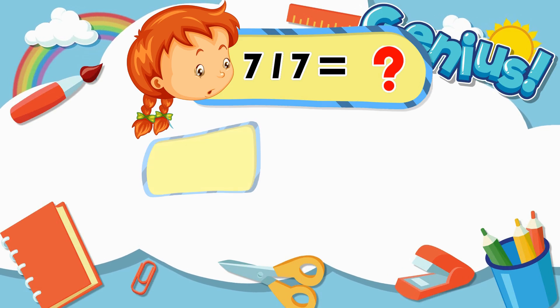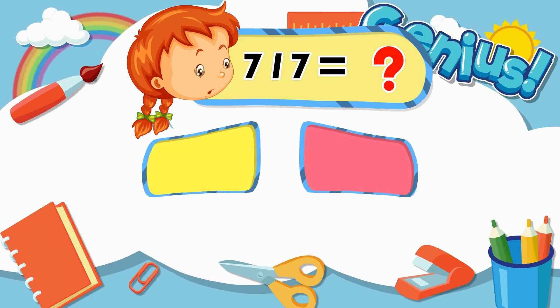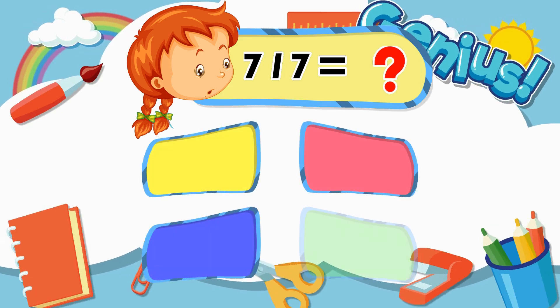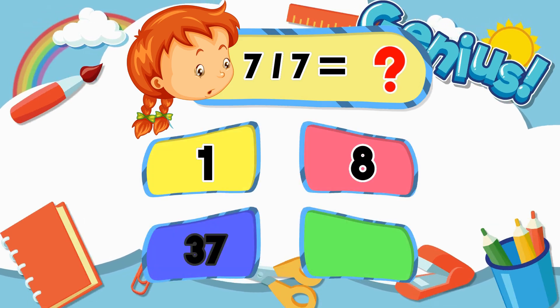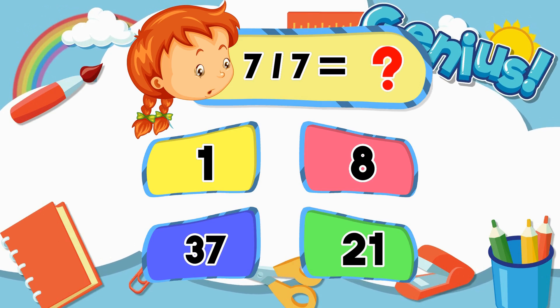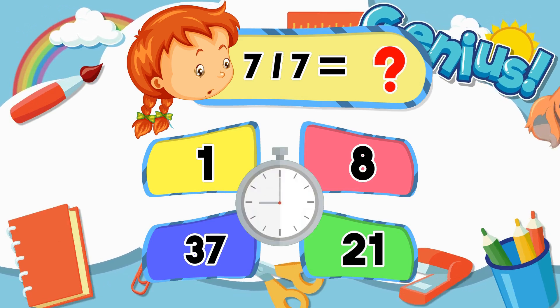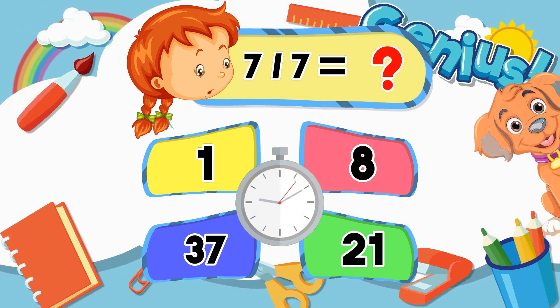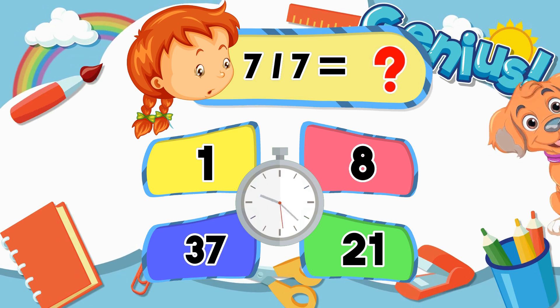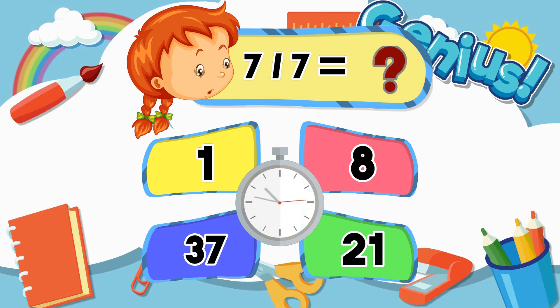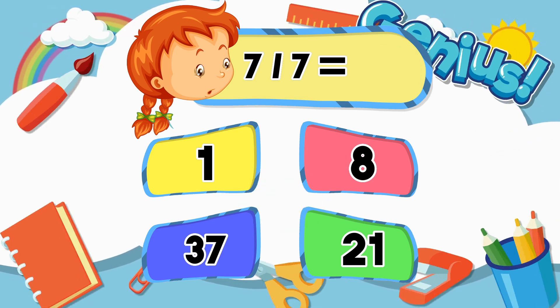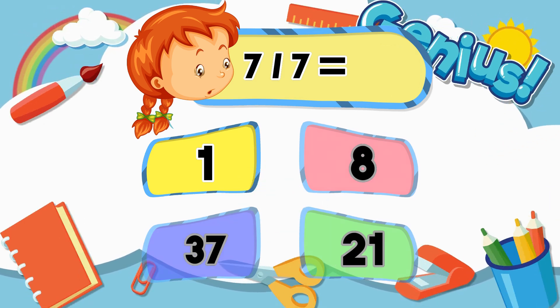What is 7 divided by 7? One. Eight. Thirty-seven. Twenty-one. Correct answer: 1.